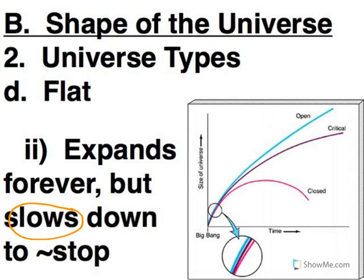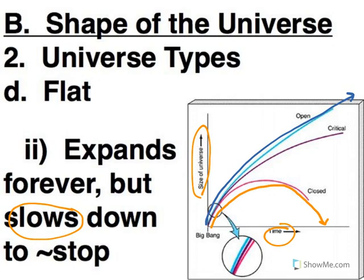And if we look at our graph here, we've got size of the universe versus time. So we have seen our closed universe. It gets bigger and then it collapses back down. And we've seen our open universe that gets bigger and bigger forever and ever. So our critical density universe, our flat universe will get bigger. But this line eventually is going to kind of look like it gets horizontal.